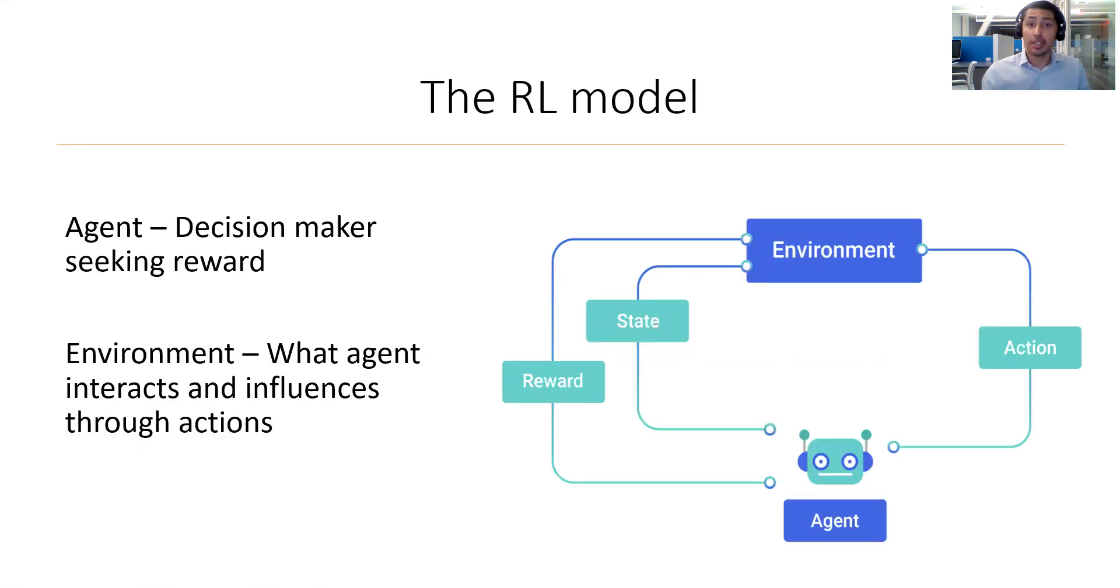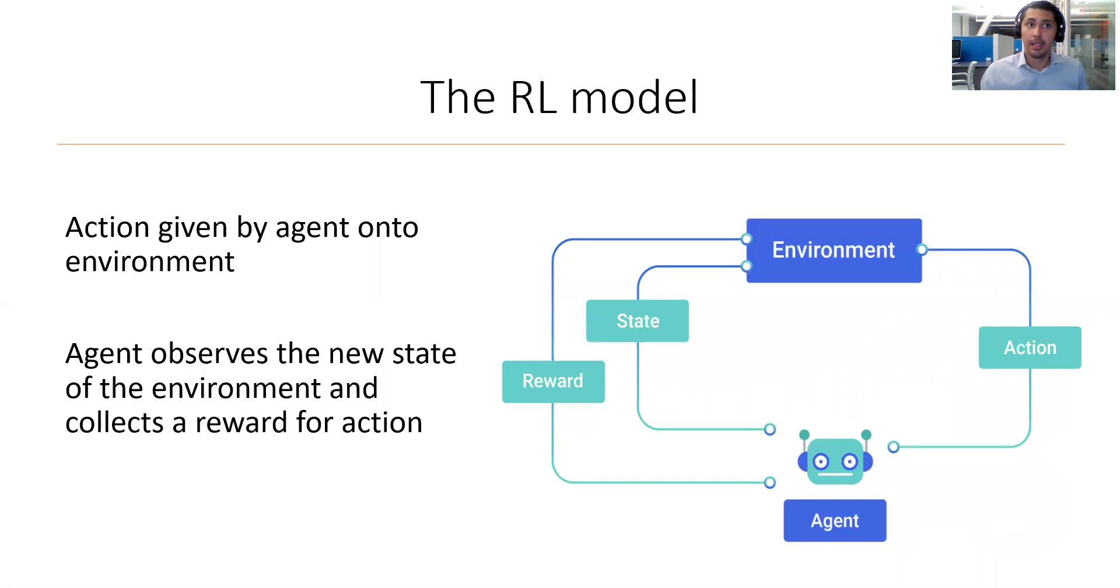Here we show a high level overview of the reinforcement learning model. The model is driven by the intelligent agent shown at the bottom. The agent interacts with the environment and influences it by choosing an action to conduct onto it. A simple example would be some robot, the agent, must manage its way out of a maze, the environment. For it to do that, it must take some action such as moving forward, backwards, left, or right.